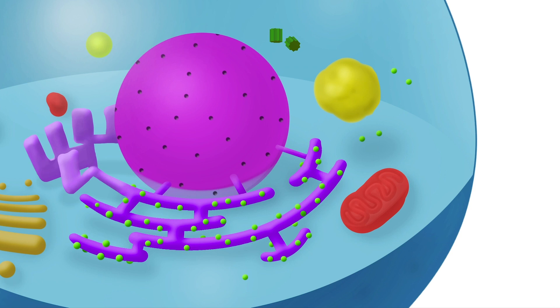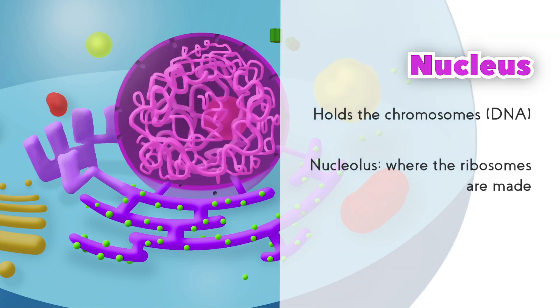This big pink organelle is called nucleus. The nucleus contains the chromosomes with your DNA and a small structure called nucleolus, where ribosomes are made.